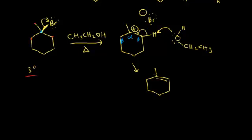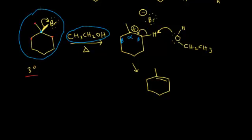Now let's discuss where the term E1 comes from. E stands for elimination—the leaving group leaves and a double bond forms. The 1 means unimolecular: the rate of reaction depends on the concentration of only one reactant, the tertiary alkyl halide. The formation of the carbocation is the rate-determining step—the slow step. The ethanol can't do anything until the carbocation forms, so the rate doesn't depend on ethanol's concentration. Since rate depends only on the alkyl halide concentration, it's unimolecular—that's the 1 in E1.